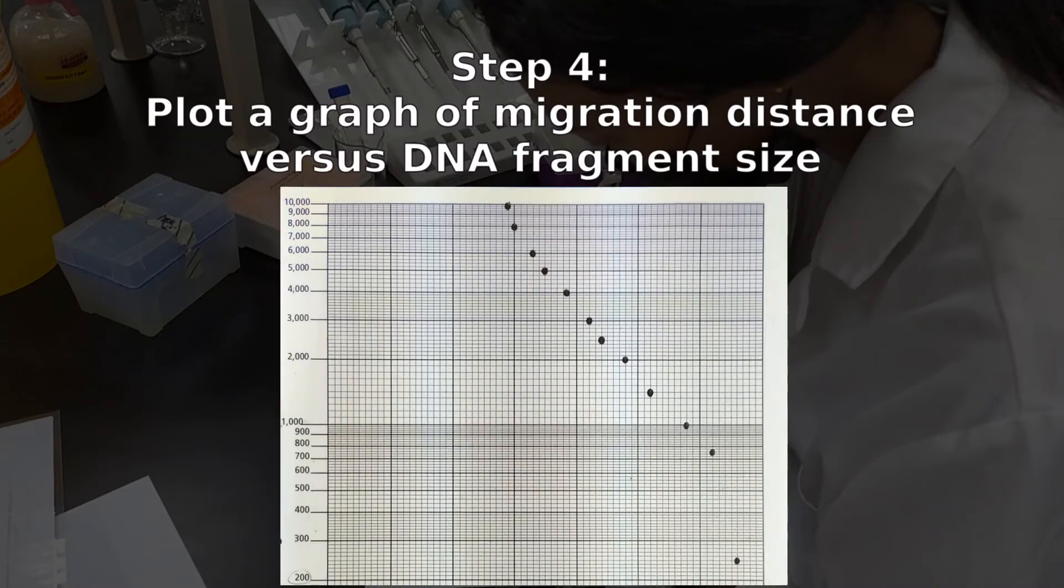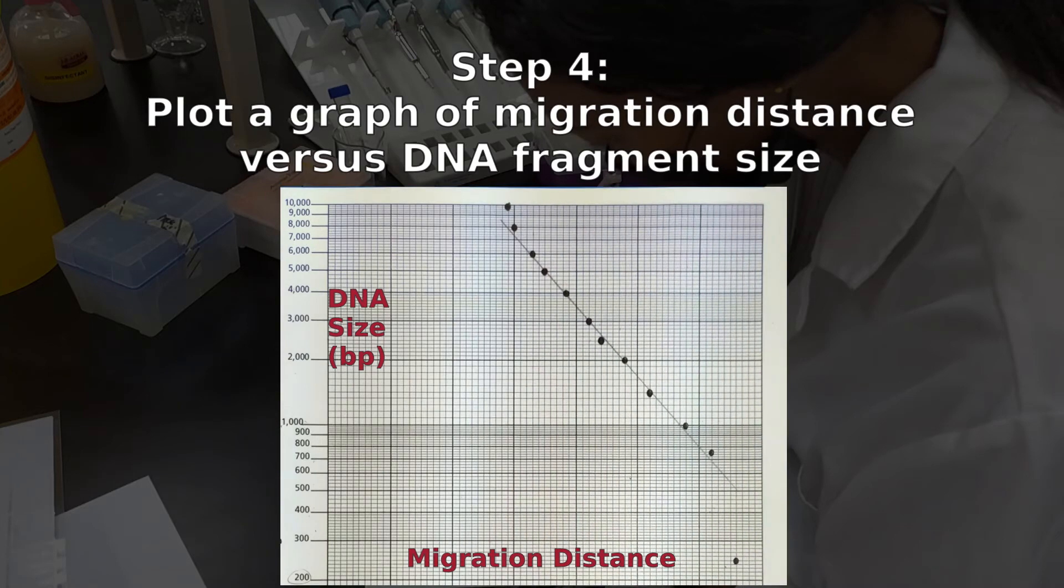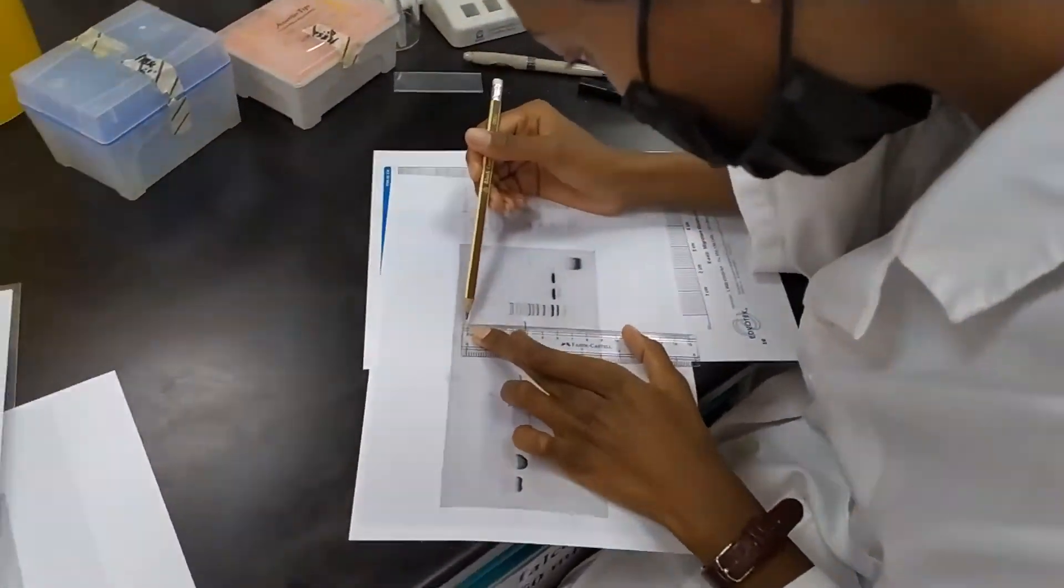Once you have plotted the molecular weight versus migration distance on a graph, you're going to look for the linear portion of the line and draw a straight line. And then, based on that straight line, you will be able to determine the size of any of the unknown fragments from the gel, as you can see here.